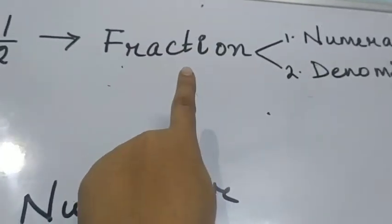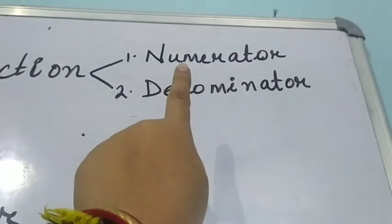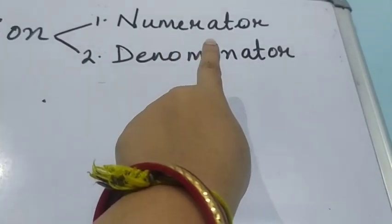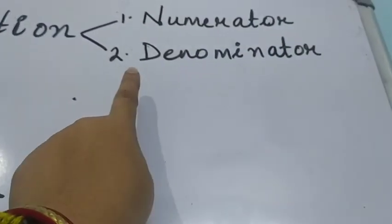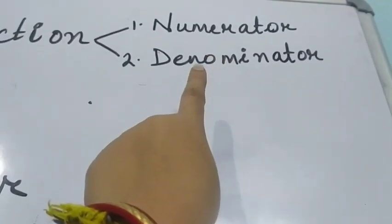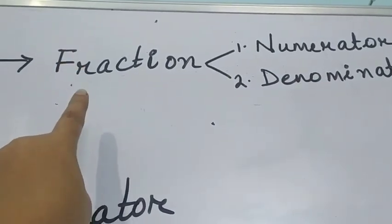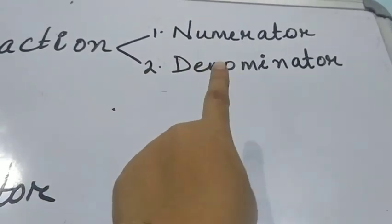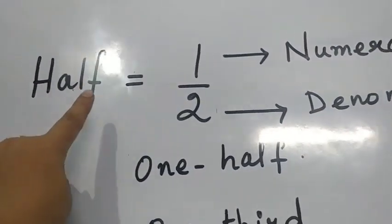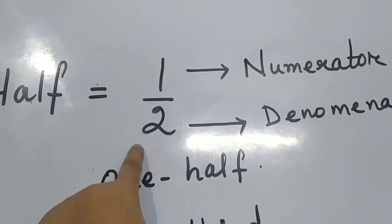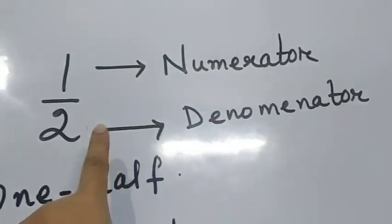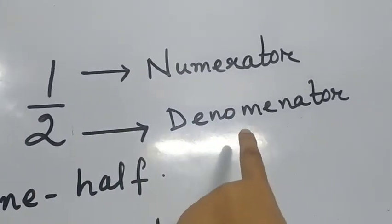This fraction has two main parts. One is the numerator — N-U-M-E-R-A-T-O-R — and the other one is the denominator — D-E-N-O-M-I-N-A-T-O-R. So this half, one by two, is the fraction. This upper one is called the numerator and the lower one is called the denominator.